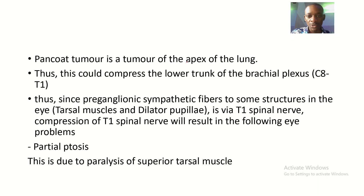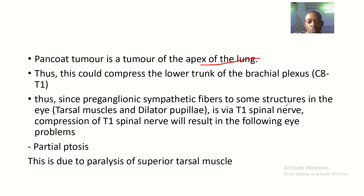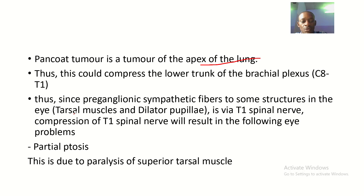A Pancoast tumor is a tumor of the apex of the lung, and it can compress the lower trunk of the brachial plexus — C8 to T1 — which passes on top of the lungs. Since preganglionic sympathetic fibers to some structures in the eye, specifically the tarsal muscle and the dilator pupillae, are supplied via T1, compression of T1 results in the following problems.